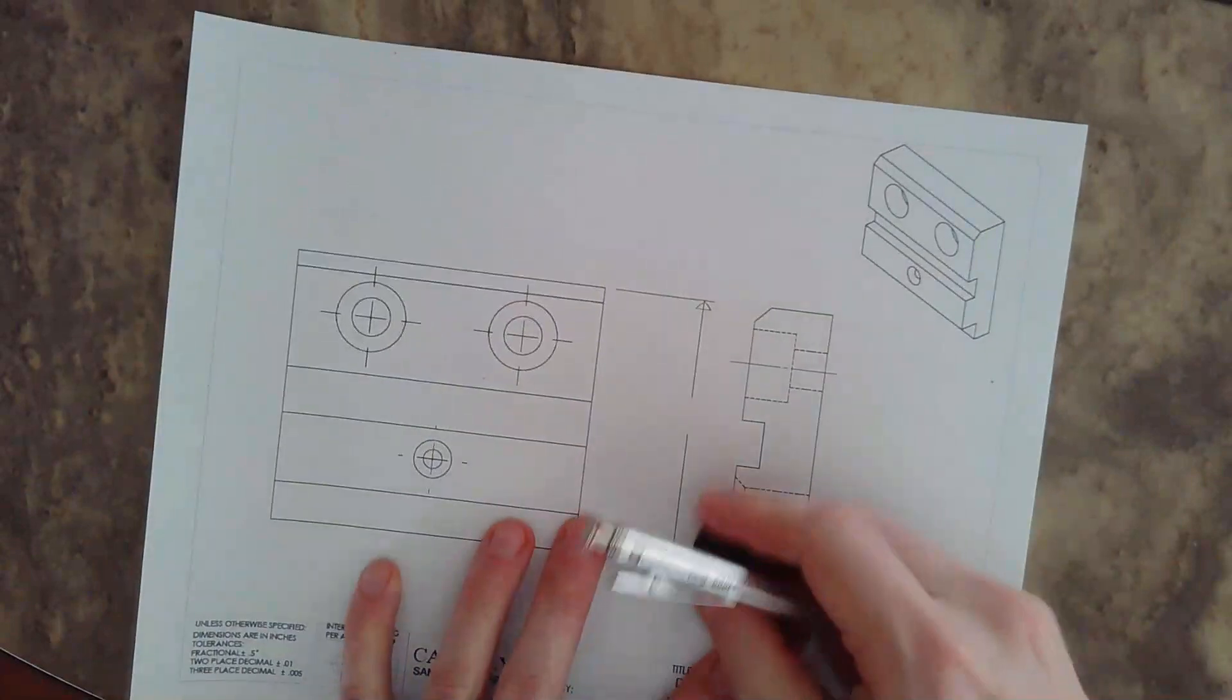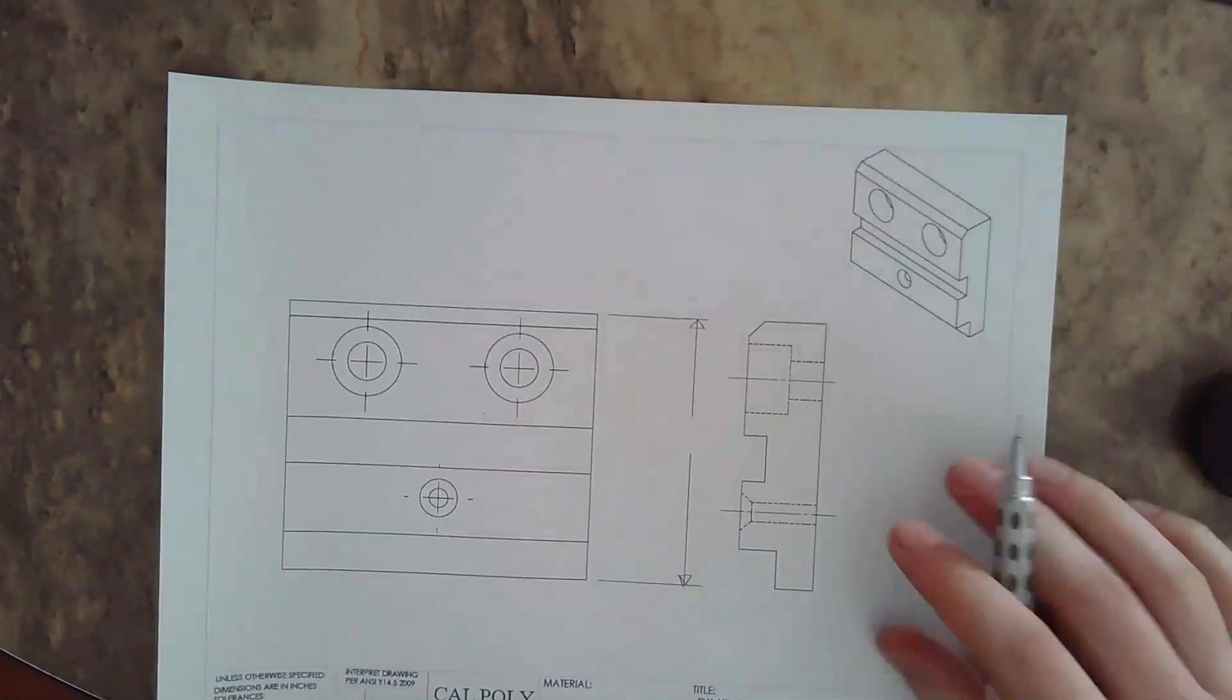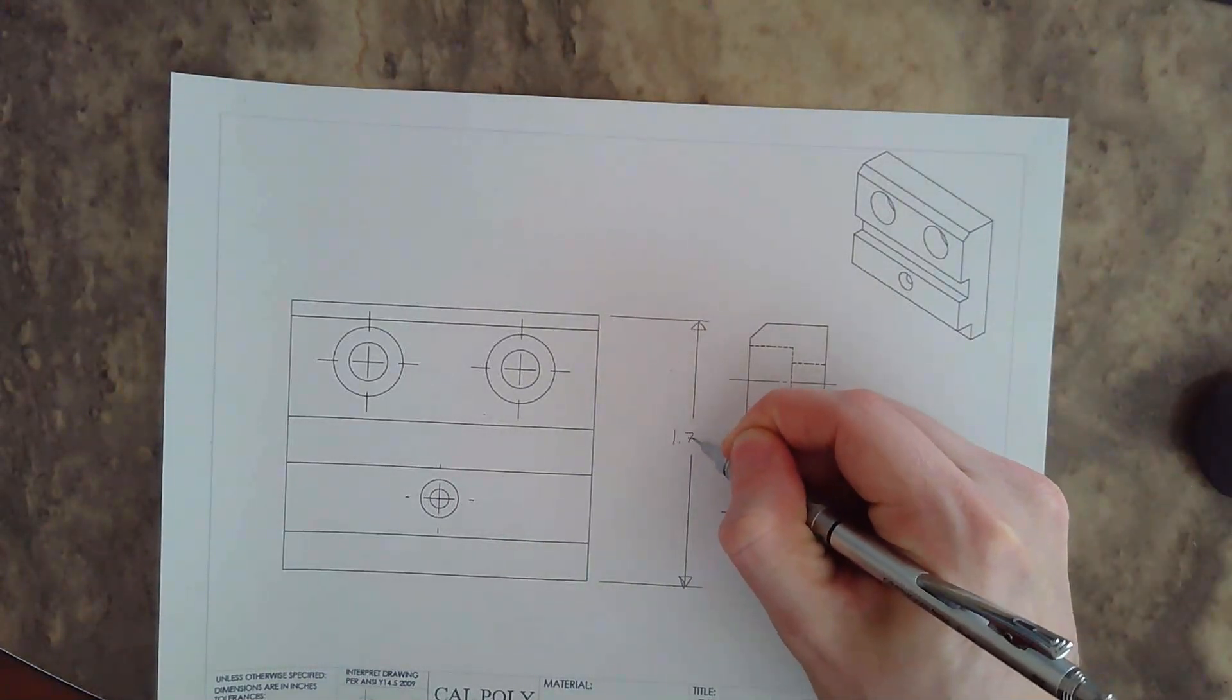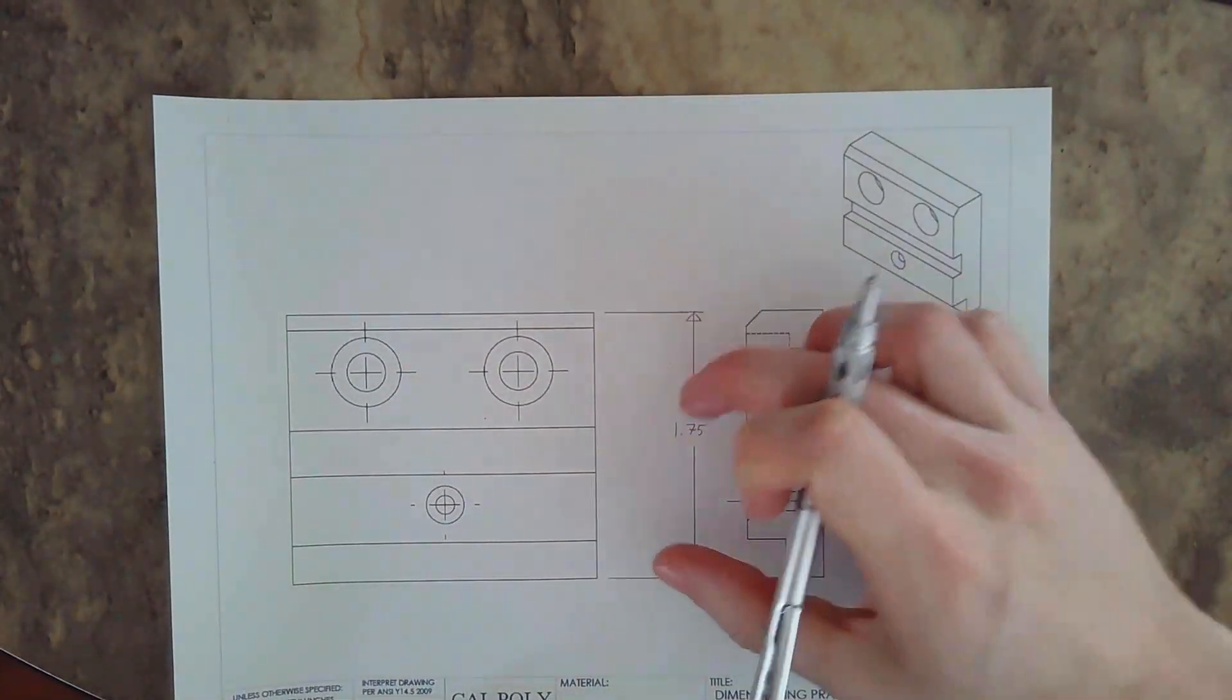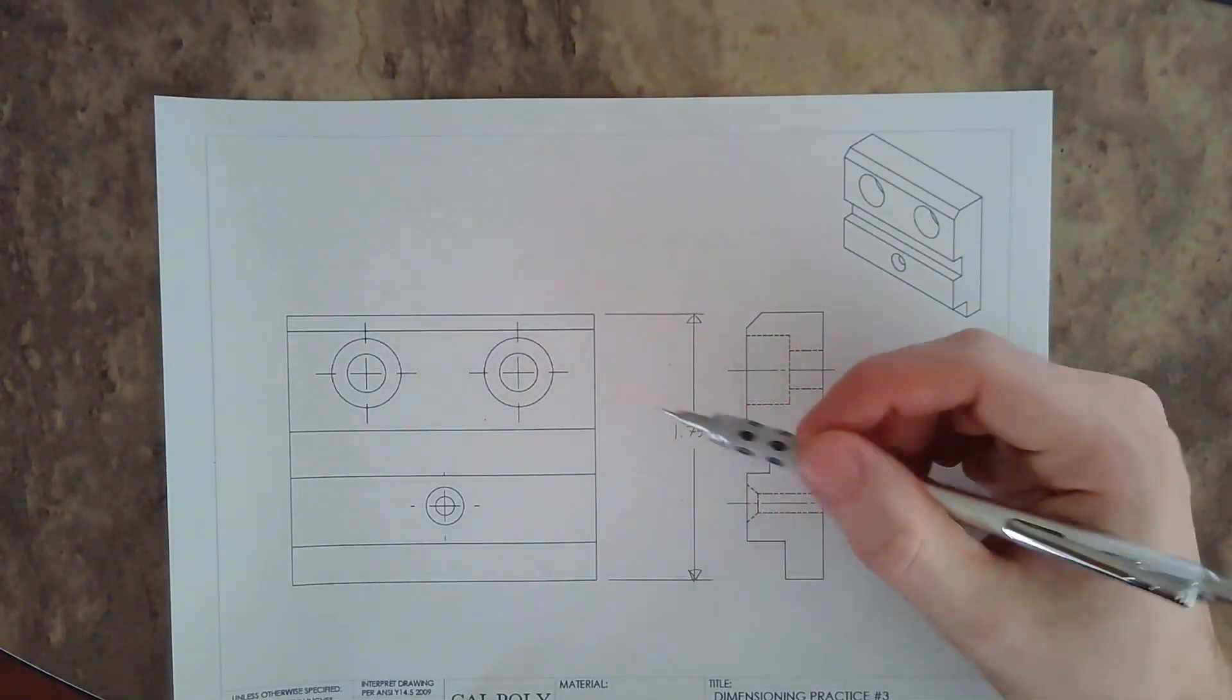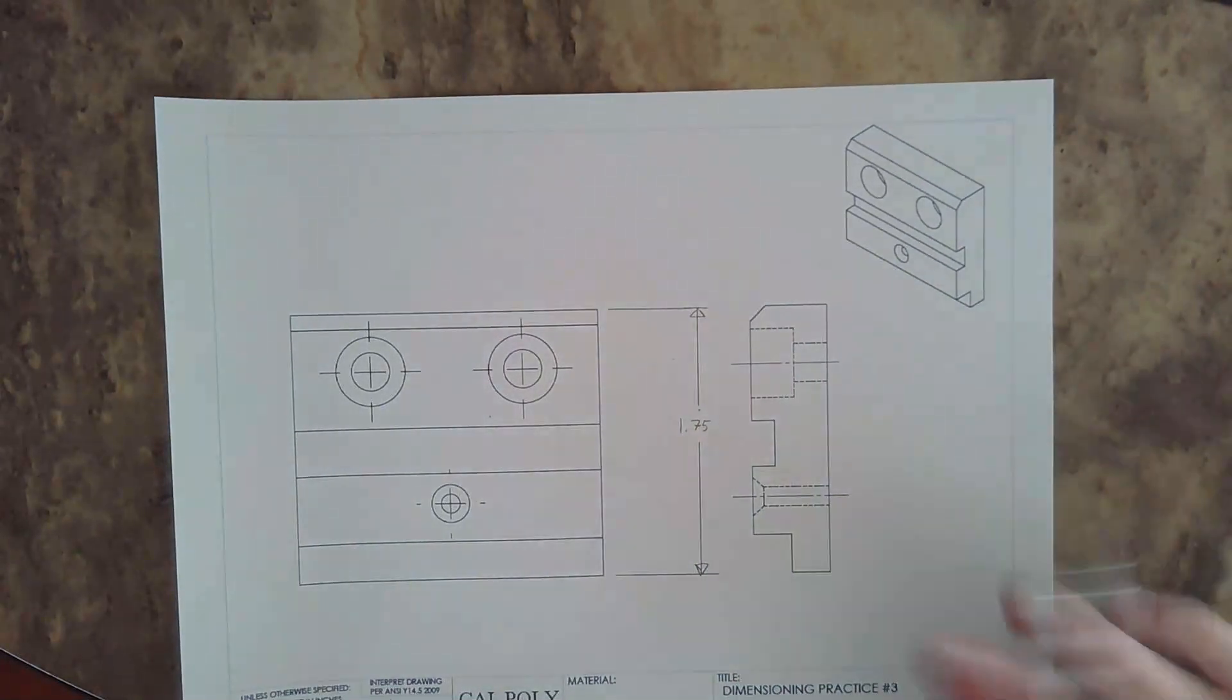For neatness, I'm going to erase some of this to make it look a little more equal. I'm going to place my 1.75 dimension. I left it out so I have room in here for more dimensions. I'm going to have to place two more dimensions here, both of them locating these holes, but that's later.